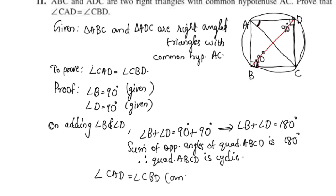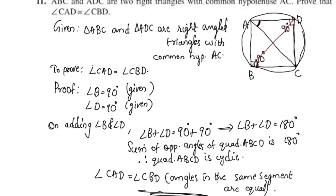Since ABCD is a cyclic quadrilateral, angles in the same segment are equal. Therefore, angle CAD is equal to angle CBD. This completes the proof. See you in the next video.